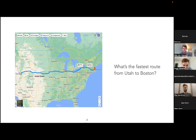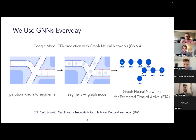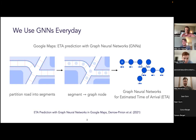For example, I'm in Utah right now but maybe I'd want to drive to Boston or Northeastern. Most of us have probably used Google Maps before, but how many of us actually know how Google decides which route to suggest? Since 2021, Google Maps actually predicts the estimated time of arrival for route options using graph neural networks, so possibly without even knowing it, many of us have used the predictions of a graph neural network in our daily lives.